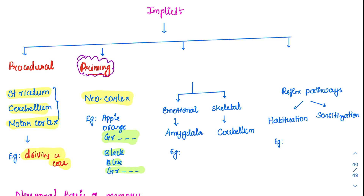Coming to the third type: associative learning. This means you associate one thing with another — for example, associating good food with memories of what your mother cooked. The classical example is Pavlov's experiment, which has both an emotional component handled by the amygdala and a skeletal component handled by the cerebellum.